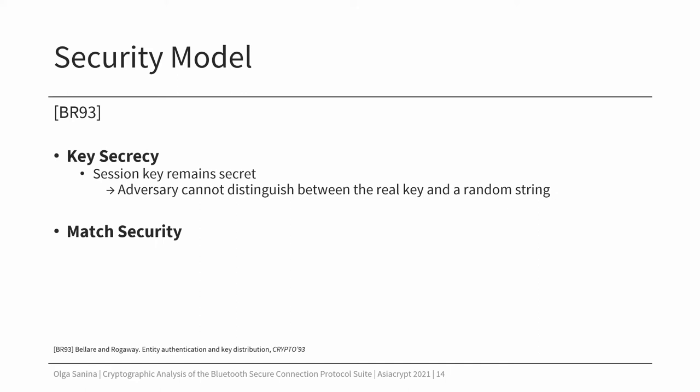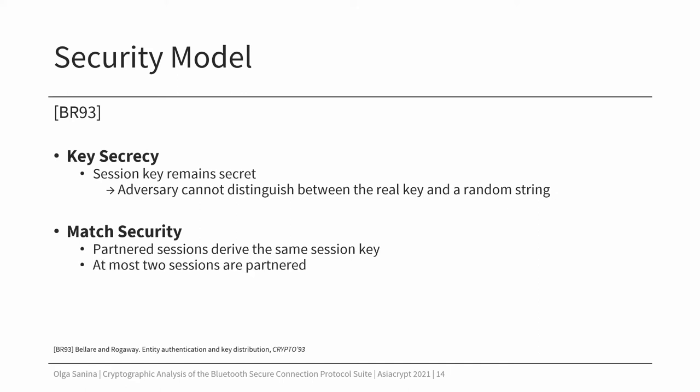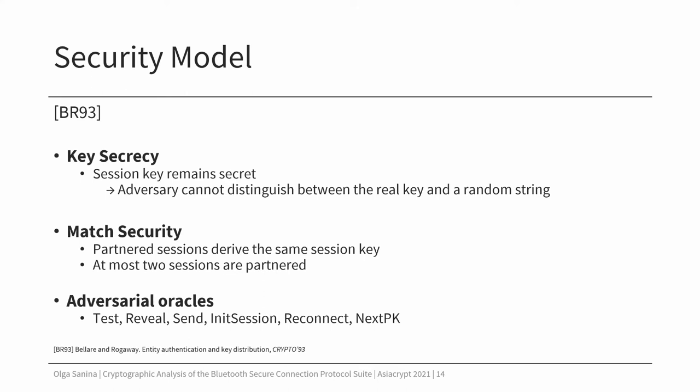The second property is match security, which consists of two conditions. First, the sessions that are partnered must derive the same session key. Second, not more than two sessions must be partnered. To capture the adversarial behavior, we give him access to oracles. The test oracle is used for key secrecy and the reveal oracle allows the adversary to learn the session key. Send lets the adversary send any messages to arbitrary sessions. In-session and reconnect oracles are used to establish a session with the initial connection or with the reconnection if the devices have been bonded before. Finally, we allow the adversary to choose when the devices change their Diffie-Hellman share with the next-DH oracle.